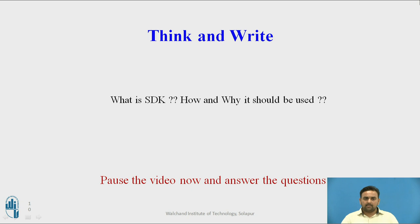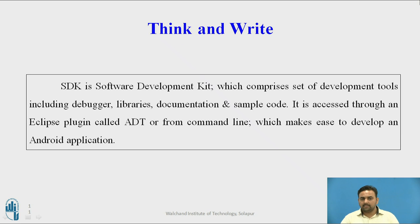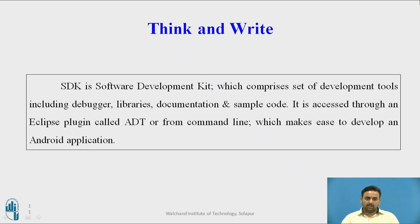A question for you: what is SDK and how and why should it be used? The SDK is the Software Development Kit, which contains a number of development components such as documentation, sample code, debugger, and libraries. It is accessed through Eclipse, the IDE. The ADT bundle uses the ADT plugins, and by using those or the command line you can access the SDK, which makes it easy for developers to build applications.